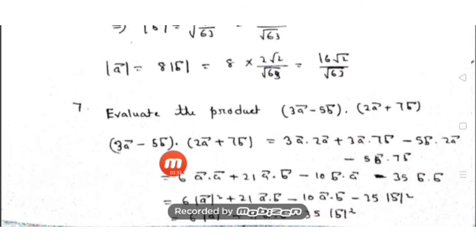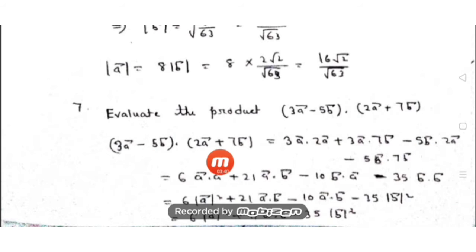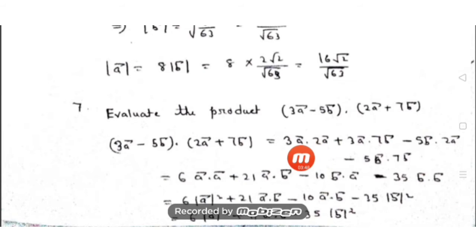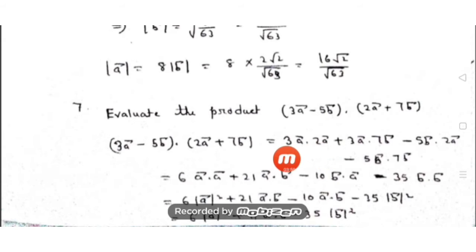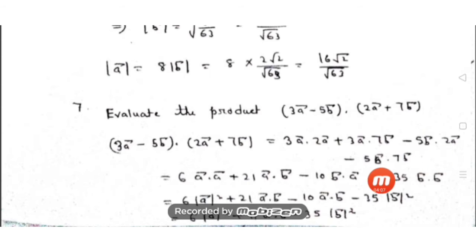Expanding: 3a·2a + 3a·7b - 5b·2a - 5b·7b. Taking constants out of the dot product symbol (since λa·b = λ(a·b)), we get: 6(a·a) + 21(a·b) - 10(b·a) - 35(b·b).